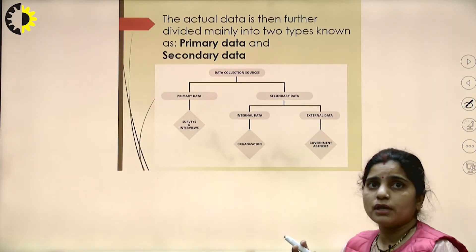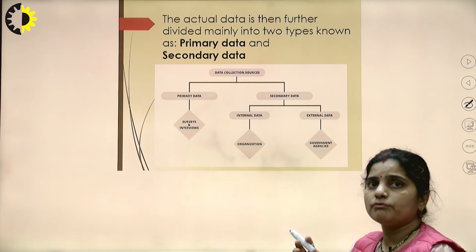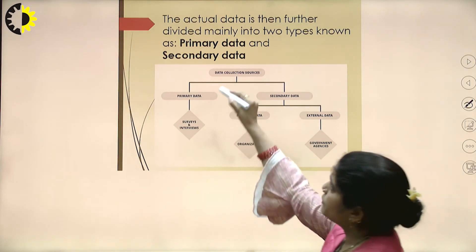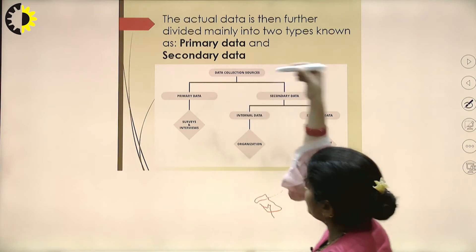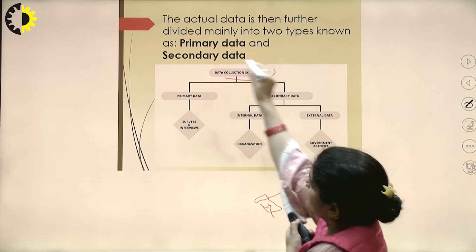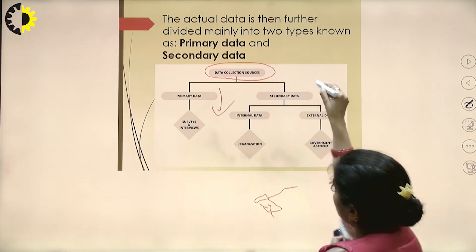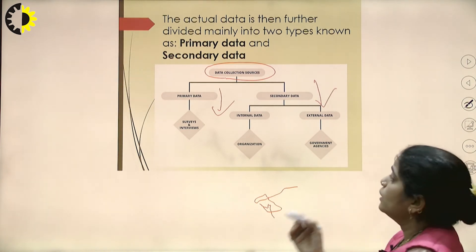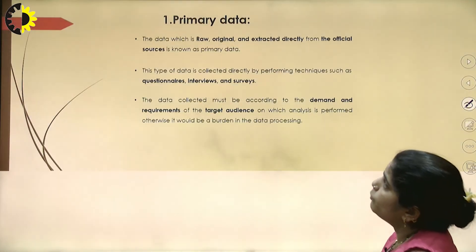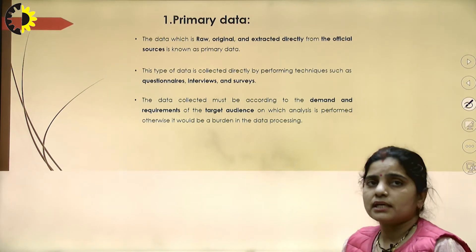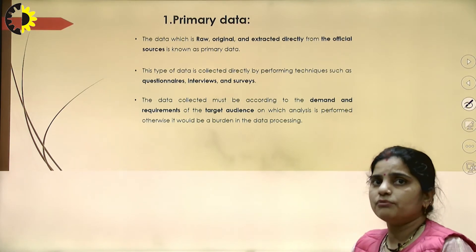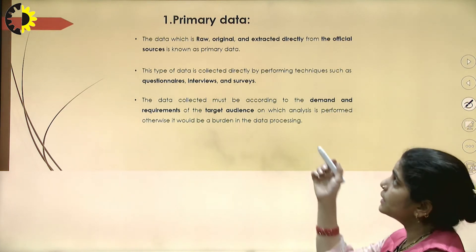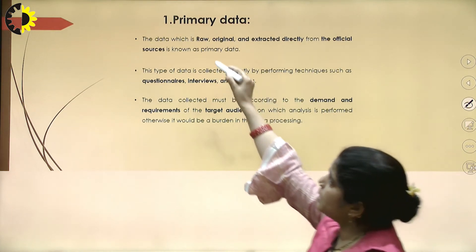The actual data we collect from different sources can be classified into two types based on data collection sources. The first one is primary data and the second one is secondary data. Primary data is original data that can be extracted directly from official sources.